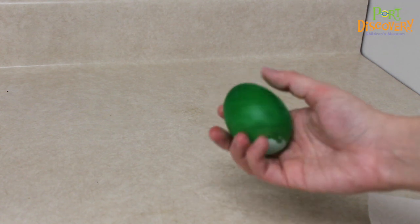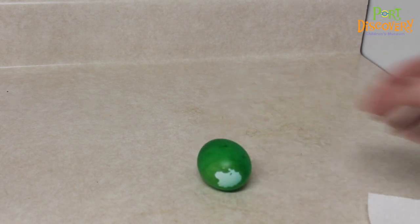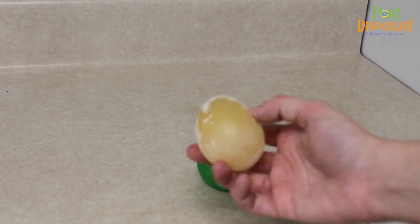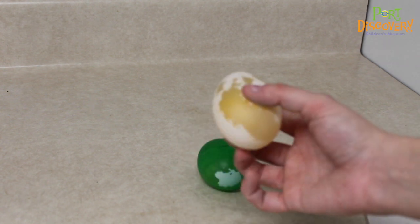You'll likely notice that the egg is larger than before because as it sits in the vinegar, some of the vinegar is getting absorbed into the egg through its semi-permeable membrane.